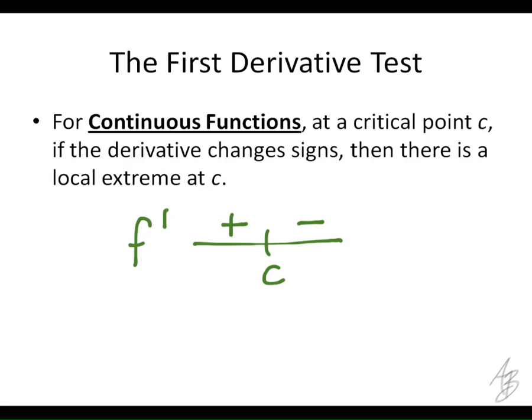What we have here is a situation where c is a critical point. Remember, the critical points are where the derivative is equal to zero or is undefined, and those are the only points on a function where the derivative can change signs. We know that over the interval to the left of c the function is increasing, and on the interval to the right of c the function is decreasing. It's going to be some sort of curve, but we know it's going from increasing to decreasing, so that point is going to be a maximum.